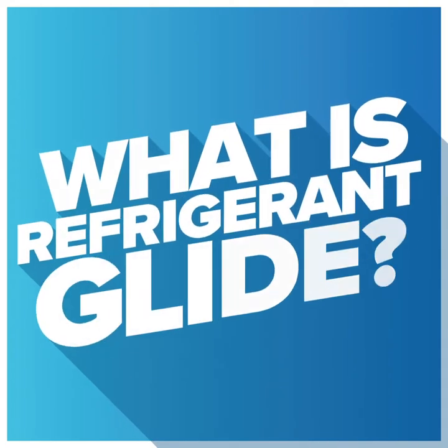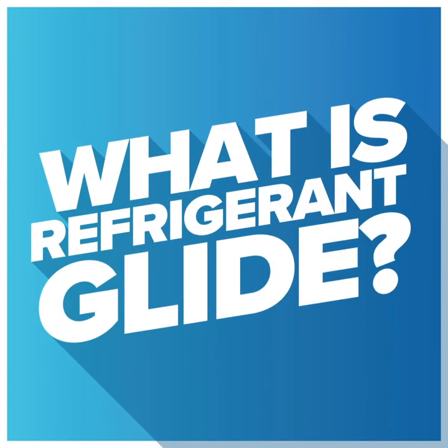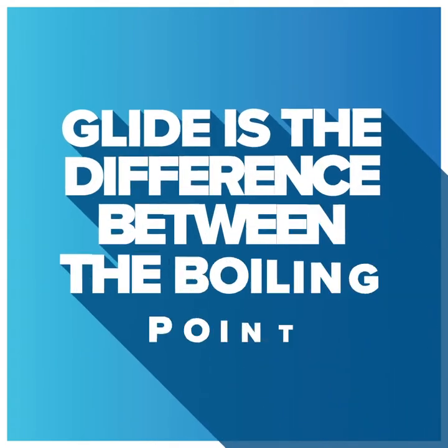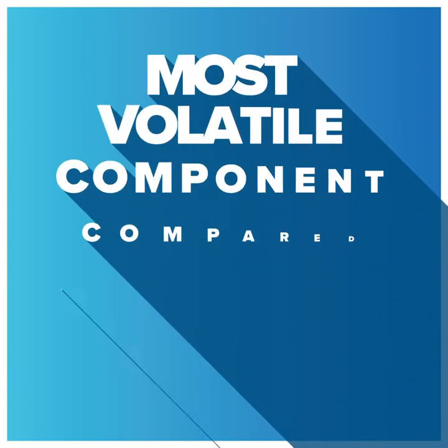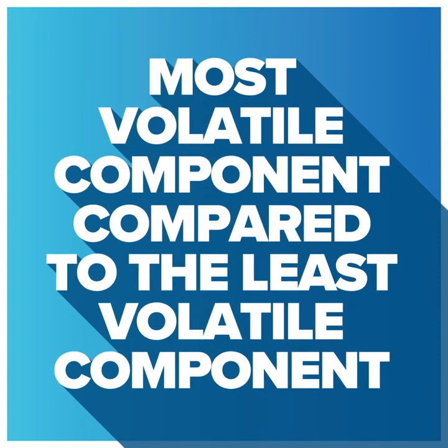But you may ask, what is refrigerant glide? Glide is the difference between the boiling point of the most volatile component compared to the least volatile component within the refrigerant blend.